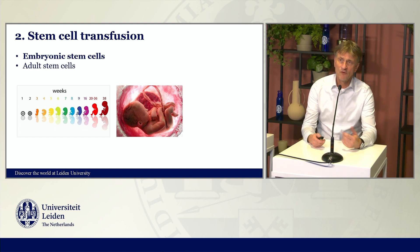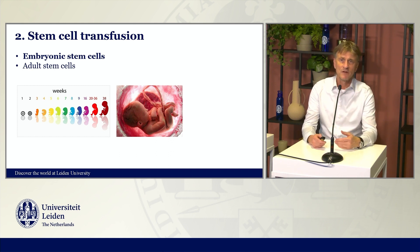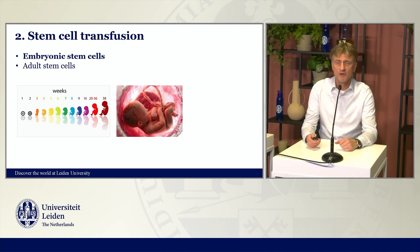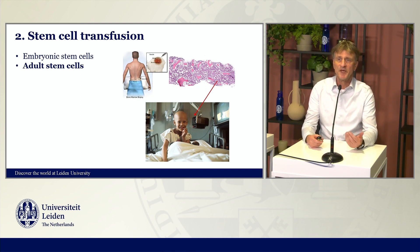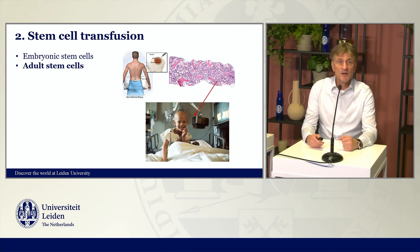The second field of blood transfusion medicine is stem cell transfusions. We know the stem cell as being able to build a complete human being from conception to birth. Stem cells remain present in us when we are grown up. The most famous example of success is the hematopoietic stem cell, which resides in the bone marrow and is used hundreds of thousands of times now for transplanting bone marrow cells back to a patient who has cancer, to restore hematopoiesis.